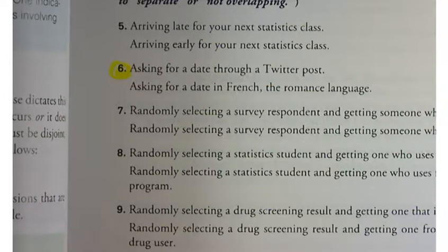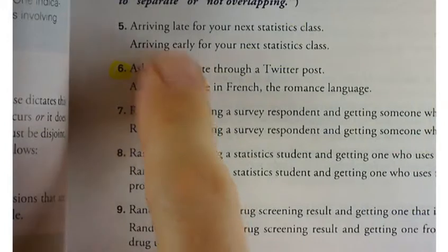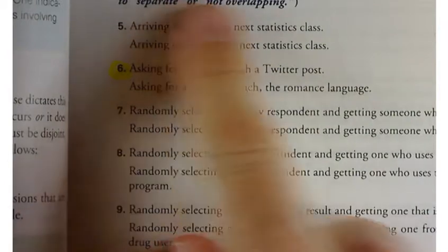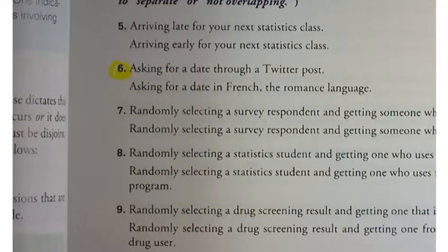So let's look at a couple of examples here. It says, determine whether events are disjoint. Two events are disjoint for a single trial. Consider disjoint to be equivalent to separate or not overlapping.